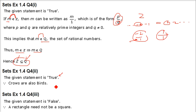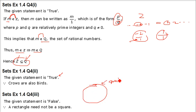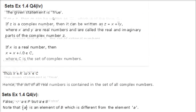Then: the set of all rectangles is contained in the set of all squares. No, this is false. Rectangles and squares both come under the set of quadrilaterals. A square is a special type of rectangle where length and breadth are equal, so the statement is false.